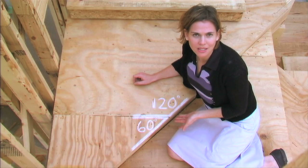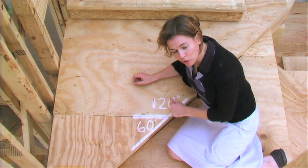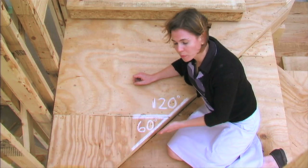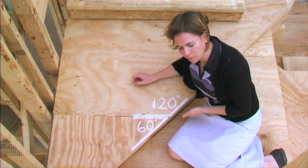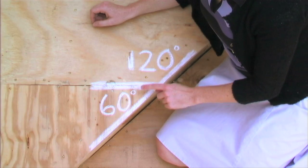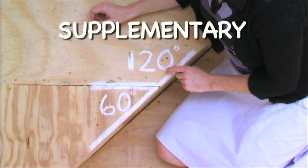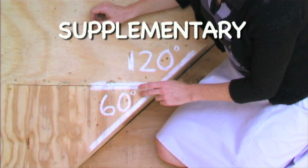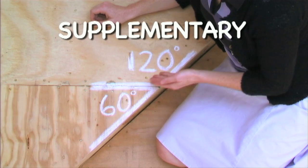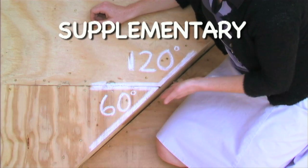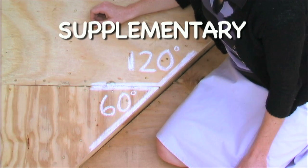This step is a great example of two angles that form a straight line. These two angles are called supplementary because together they add up to 180 degrees.